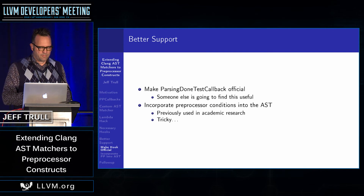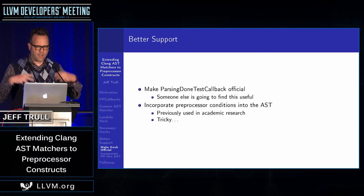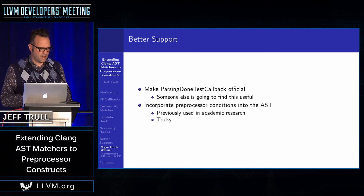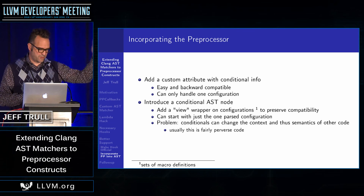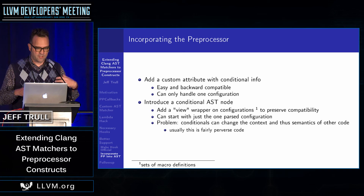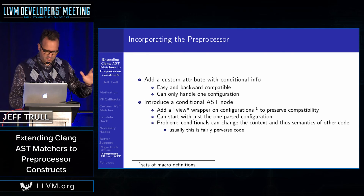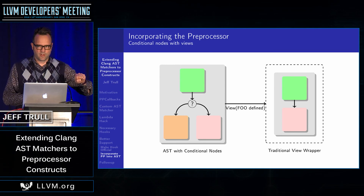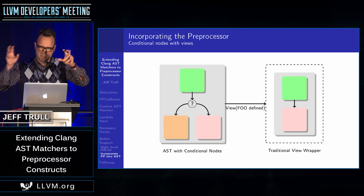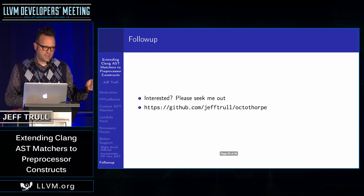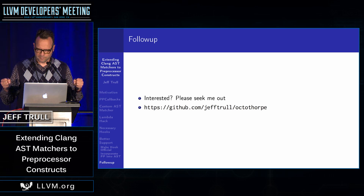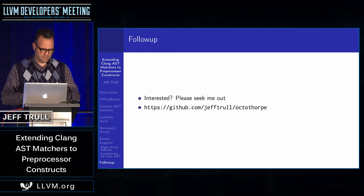It all worked, but I have some suggestions for how Clang can better support dealing with conditionals. One is to make that hook I noted more official. Secondly, we can incorporate conditions into the AST — either by a custom attribute, though it only supports one set of conditions, or by introducing a new AST node which is conditional. We can add that conditional node and then add a special view, ideally programmable, so you can say assuming these macros are defined, give a view that can be used by existing tools. Understanding these conditionals is going to be really important for refactoring tools because there's a lot of legacy code that uses them. I hope other people are interested too — please seek me out. Thank you.